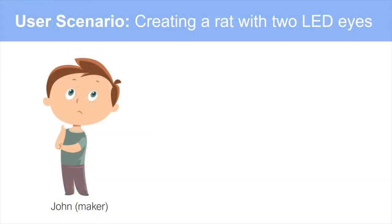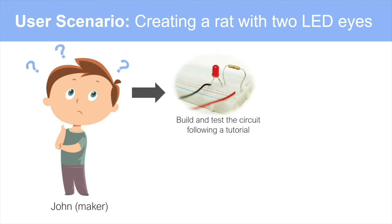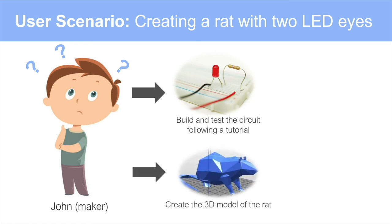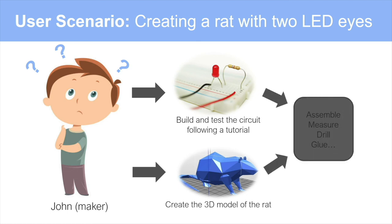Let's see a concrete user scenario. Let's say there's a maker called John who wants to create a robot with two LEDs embedded as eyes. First, he might prototype a simple LED circuit on a breadboard. Then he might create the 3D model in a CAD tool. Once these two parts are done, he might 3D print the robot model, then figure out how to embed the electronics inside, drilling holes for the eyes and embedding the LEDs. Sometimes he might need to go back to the CAD tool and reprint the model.